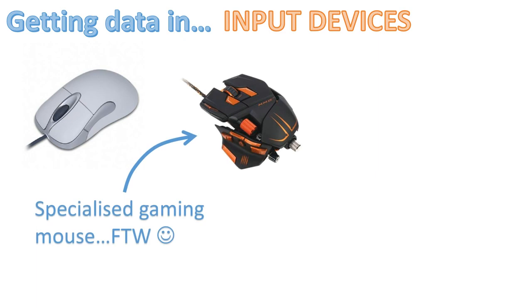The gaming mouse has added buttons and adjustable weights. Players can also adjust the DPI — basically how sensitive the mouse is. When sniping in a game, if you lower the DPI, you can move the mouse a lot but on screen it'll only change a little bit. So this mouse is specialized compared to the normal one.